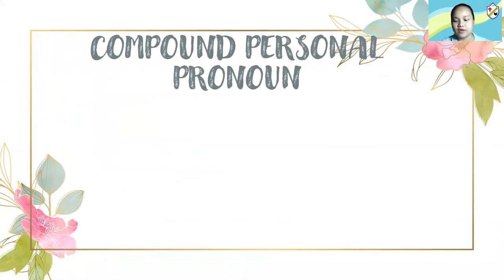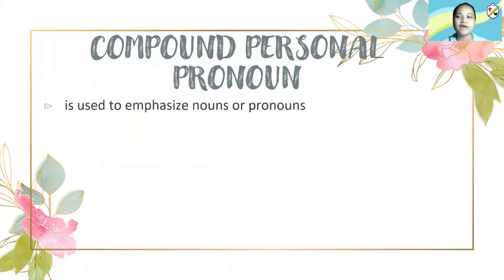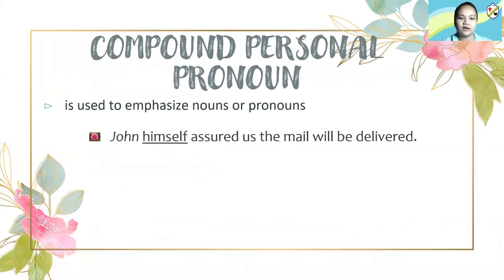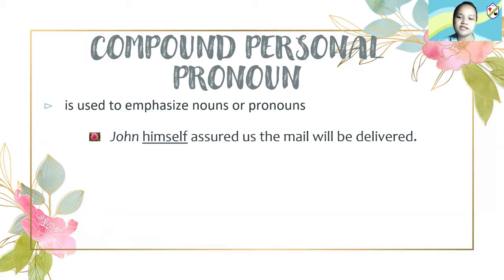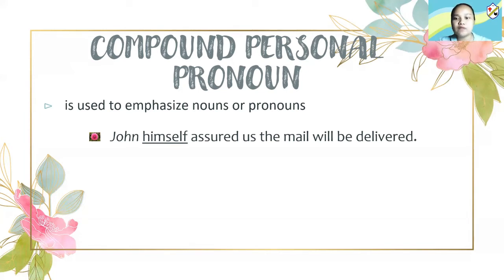We also have the compound personal pronoun. When we say compound personal pronoun, it is used to emphasize the noun or the pronoun itself. There are actually two types: reflexive and intensive pronoun. When we say reflexive, it is usually used to emphasize the noun and is usually seen after the noun itself. For example: John himself assured us the mail will be delivered. A reflexive pronoun can be omitted in the sentence — if you take out 'himself,' the sentence still makes sense: John assured us the mail will be delivered.